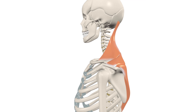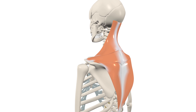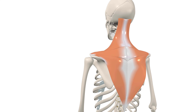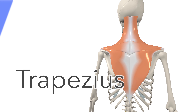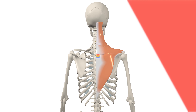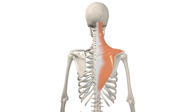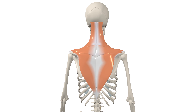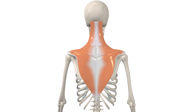In this video, we're going to talk about the anatomy and function of the trapezius muscle. The trapezius is a flat triangular muscle covering the upper and back part of the neck and the shoulders. Together, the left and right trapezius make a trapezoid shape, giving the muscle its name.